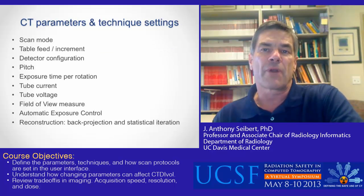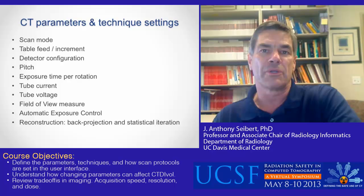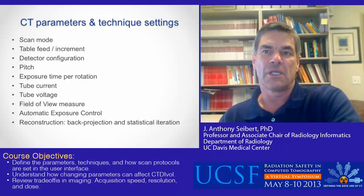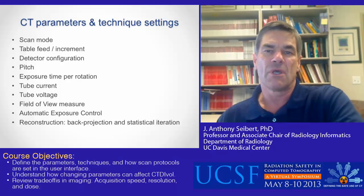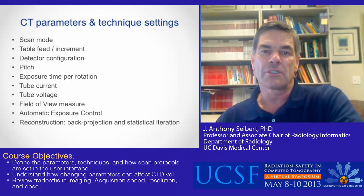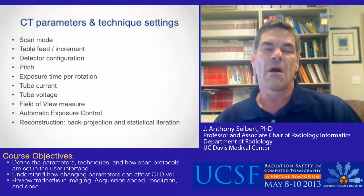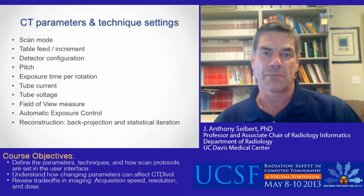In this presentation, an analysis of the trade-offs between acquisition speed, image resolution both spatial and contrast, and radiation dose is performed. There are a variety of parameter and technique settings that will be explored including scan mode, table feed and table increment, detector configuration, pitch, exposure time per rotation, tube current, tube voltage, field of view, automatic exposure control, and reconstruction methods.